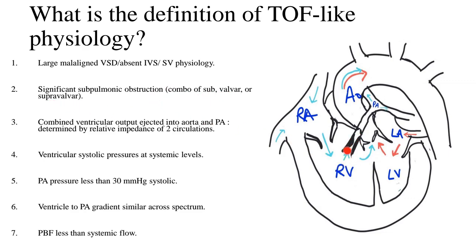As we can see in the diagram, there is a sub-valve obstruction and the valve of the pulmonary artery is also thickened. The third necessity is that the combined ventricular output ejected into the aorta and pulmonary artery is determined by the relative impedance of the two circulations — meaning whatever output the RV and LV give combined is determined by the obstruction presented by either the aorta or the pulmonary artery. In TOF-like physiology, the pulmonary artery presents greater impedance, so more output goes through the aorta.